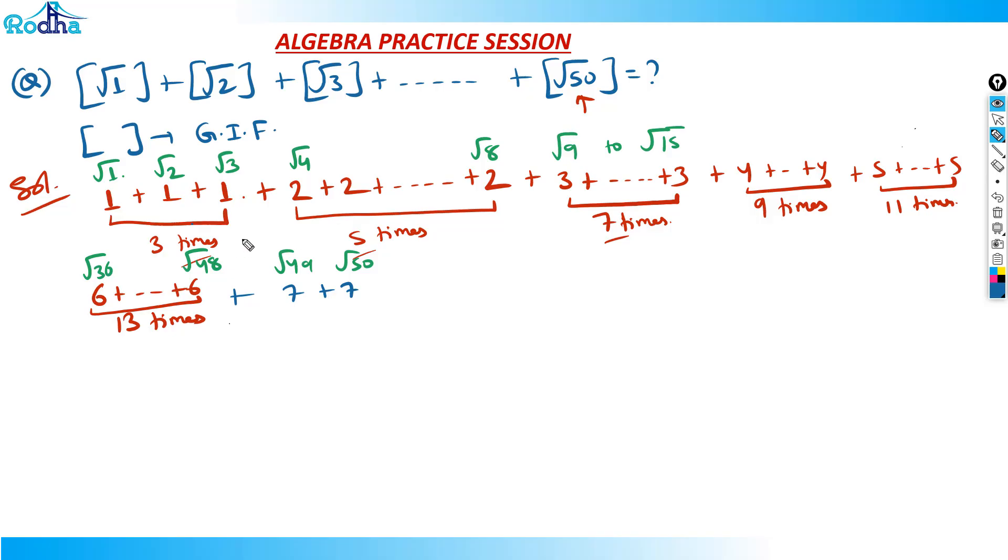3 plus 2 times 5 is 10. 3 times 7 is 21. 4 times 9 is 36. 5 times 11 is 55. 6 times 13 is 78. And 7 times 2 is 14. 3 plus 10 is 13, then 34, 70, 125, 203 and 217. So 217 is the answer of this question. I hope you got this concept - this is the greatest integer function principle.